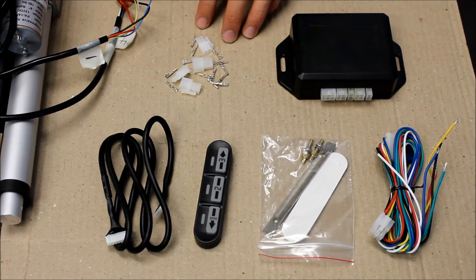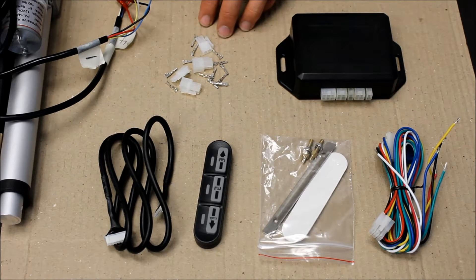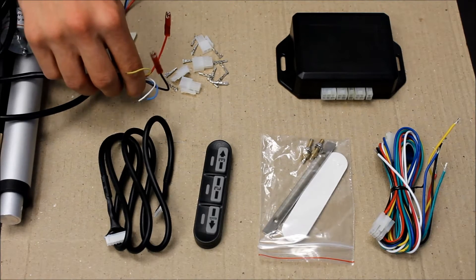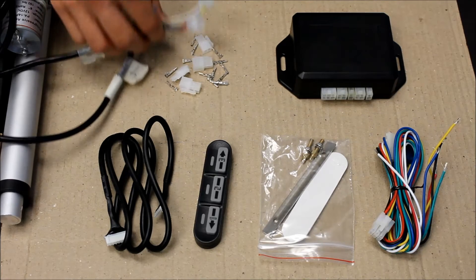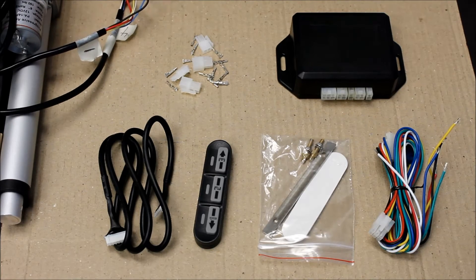These connectors need to be soldered to the end of your actuator to simplify attachment. It will change the end from this to this. See the user manual, page 4, for a wiring diagram.